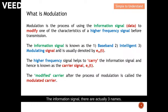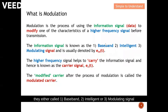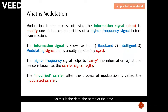The information signal — there are actually various names, but they all refer back to the same thing, which is the information signal or data. It is also called the baseband signal, intelligent signal, or modulating signal, and is normally denoted by m(t). So this is the data, and these are the different names for the data.